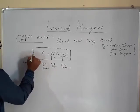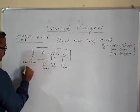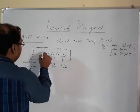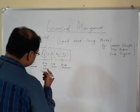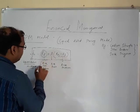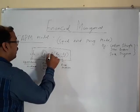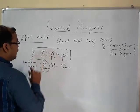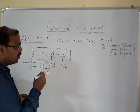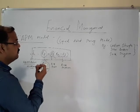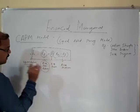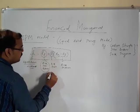In this model, Ke represents the expected return from the investment. Rf, which we discussed in our last class, is the risk-free return. The new factor in this model is the beta factor — beta is a risk factor. For now, understand that beta is the factor of risk, and we will explain how beta is determined.